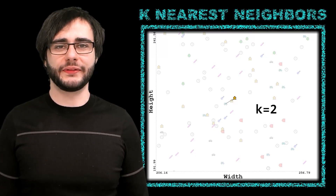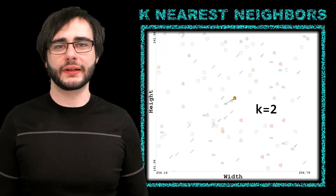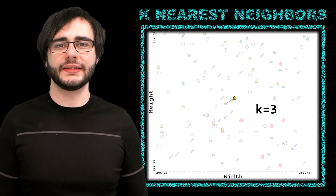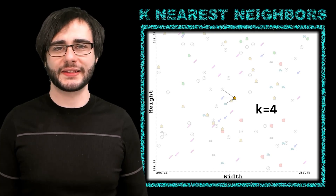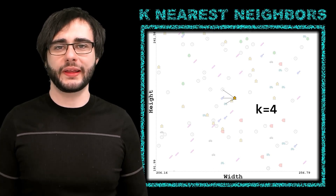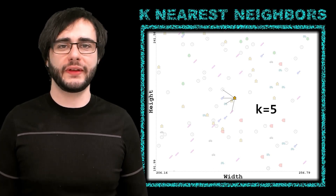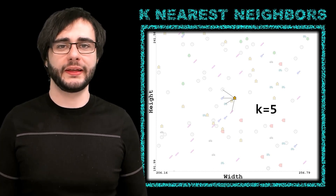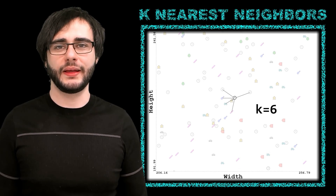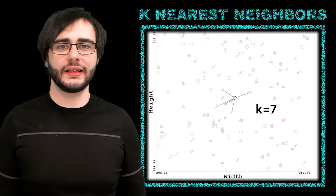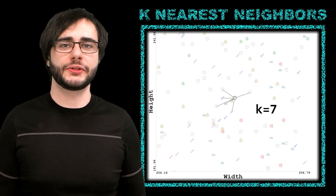A generalization of the nearest neighbor classifier is the k nearest neighbors classifier, where k is the number of neighbors that will play a role in the classification. We'll decide the class based on the majority.